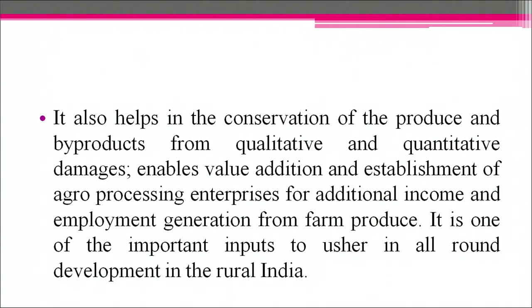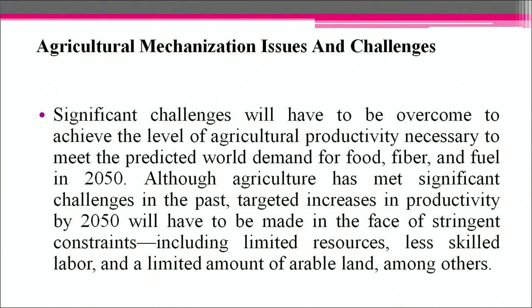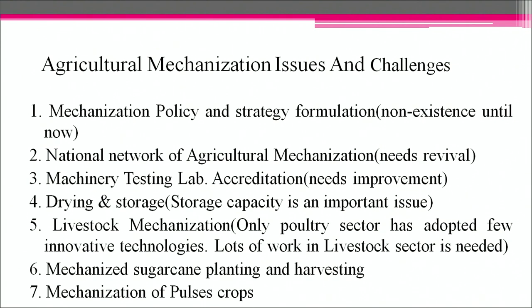Significant challenges must be overcome to achieve the level of agricultural productivity necessary to meet predicted world demand for food, fiber and fuel in 2050. Targeted increases in productivity will have to be made in the face of constraints including limited resources, less skilled labor and limited arable land. Agriculture mechanization issues include mechanization policy and strategy formulation, national network of agriculture mechanization, machinery testing lab accreditation, drying and storage, livestock mechanization — for example only the poultry sector has adopted a few innovative technologies — mechanized sugar cane planting and harvesting, and mechanization of pulse crops.